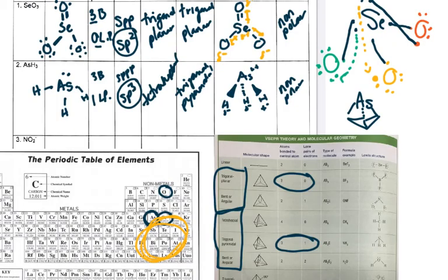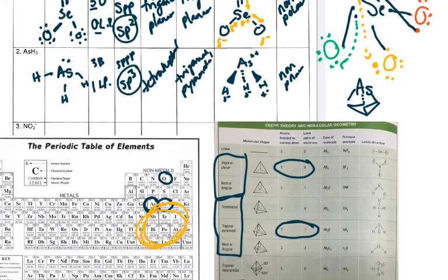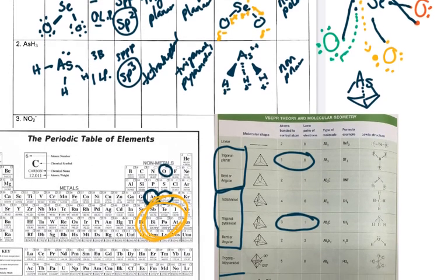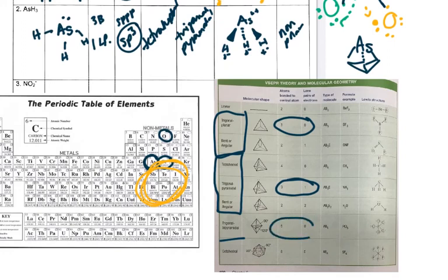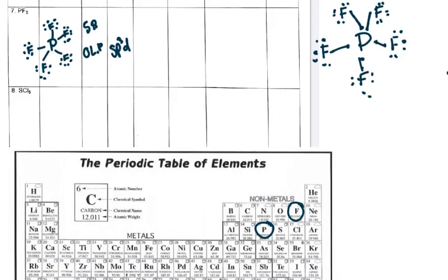The next columns are geometry and shape. Because there are no lone pairs, the geometry and the shape are going to be the same. With five bonds and no lone pairs, it is trigonal bipyramidal — both the geometry and the shape are trigonal bipyramidal.